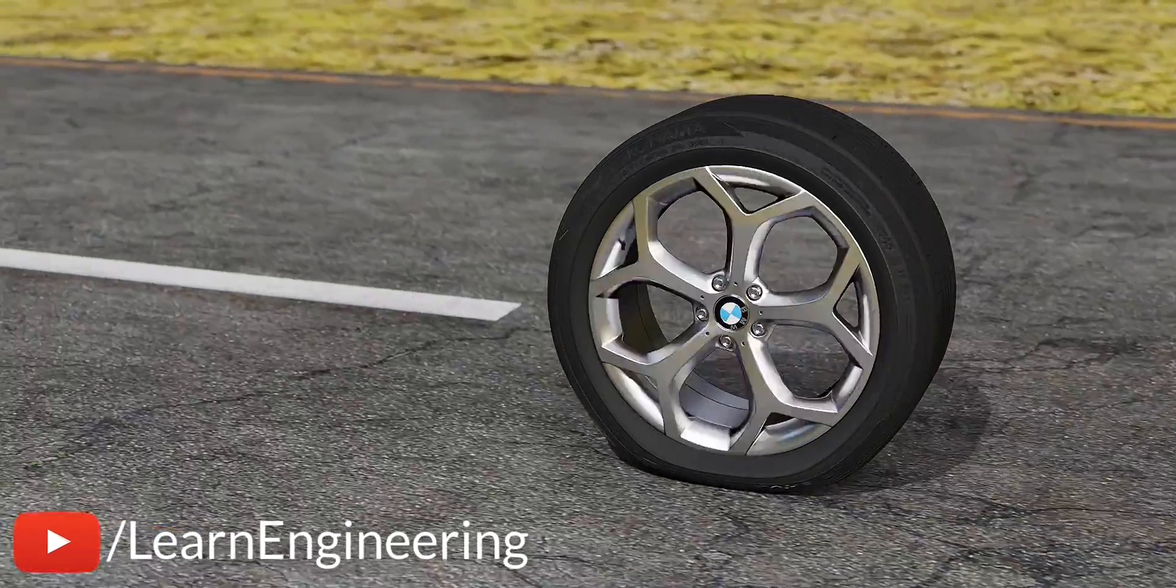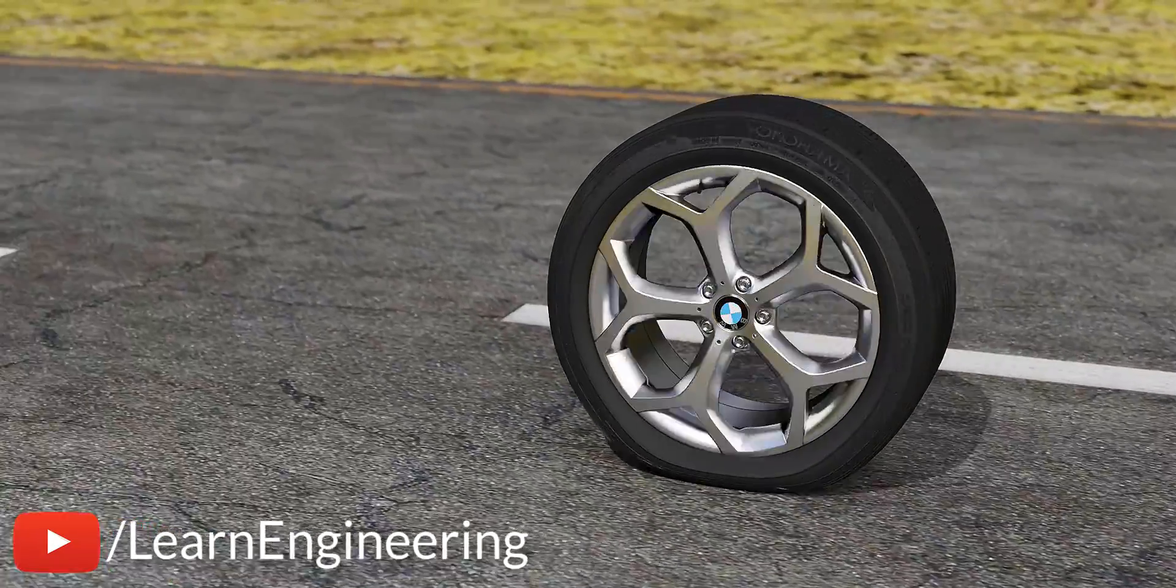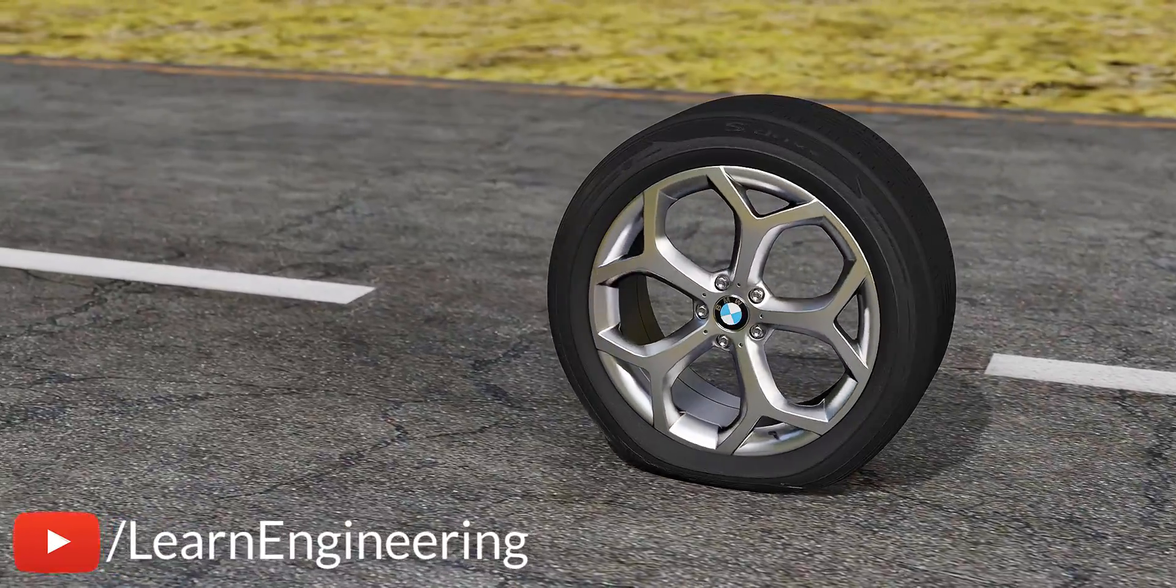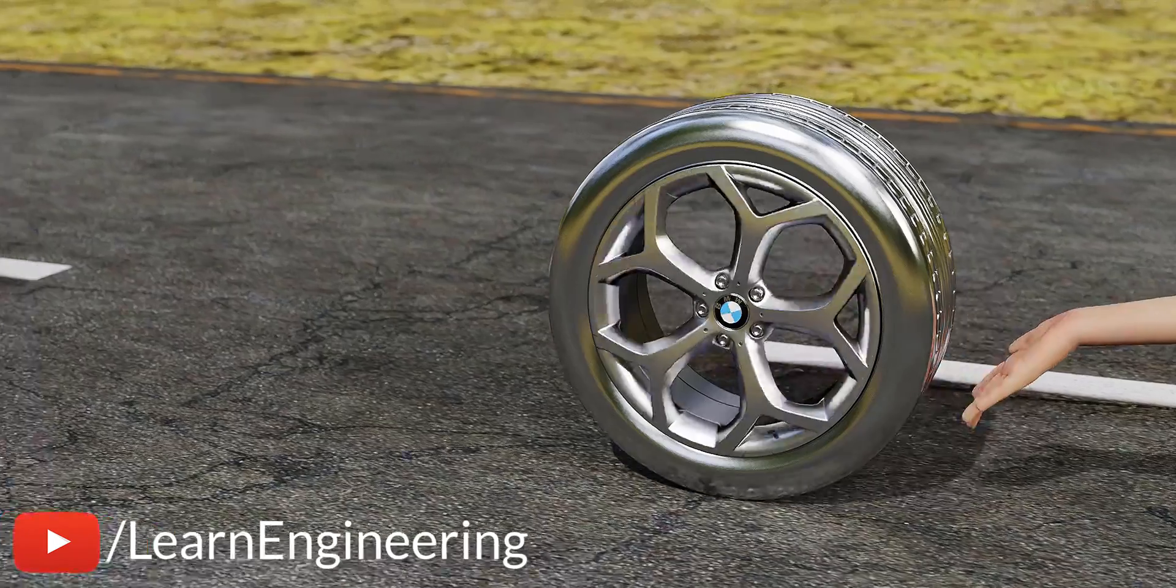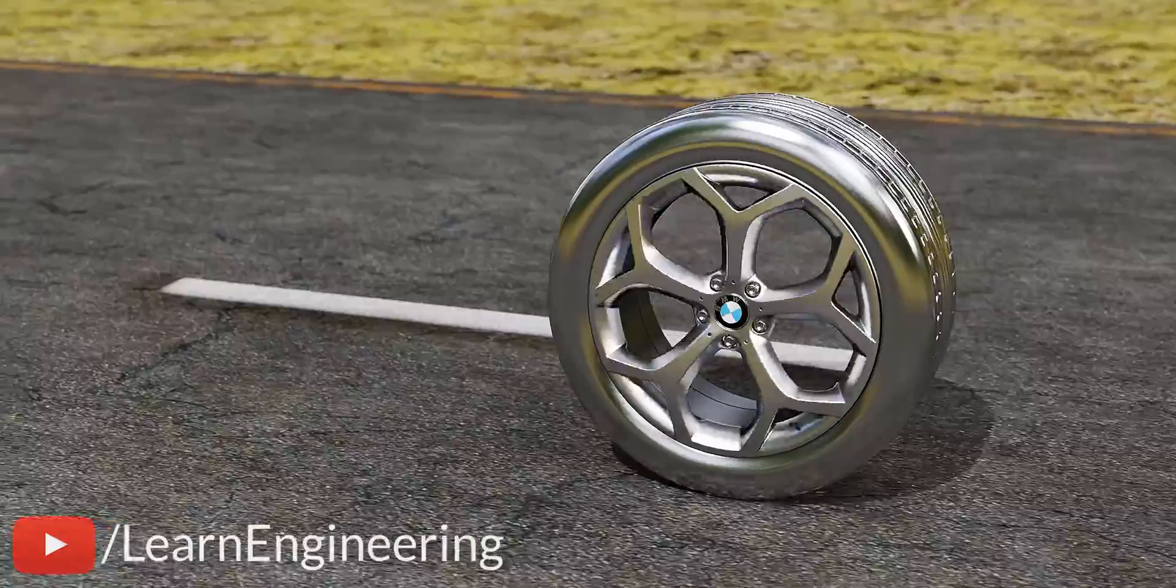If you roll a car tire, eventually, it will stop. But imagine the tire is made out of steel. That tire would roll for quite a distance.